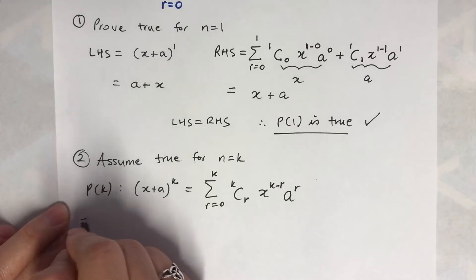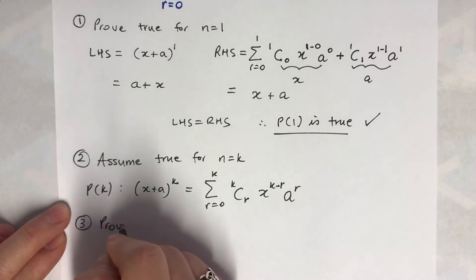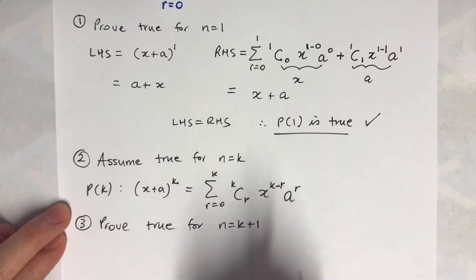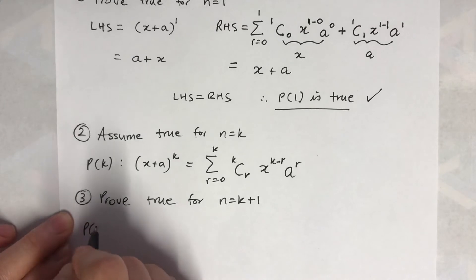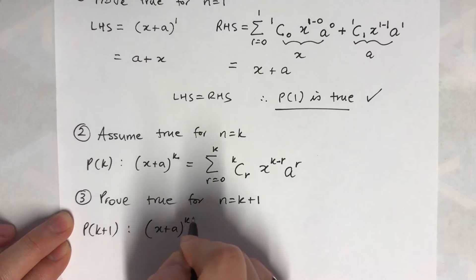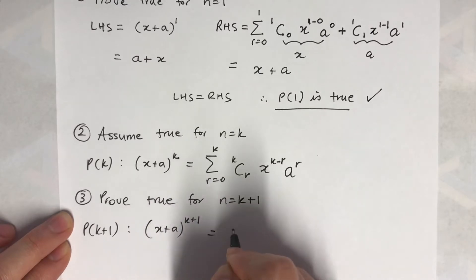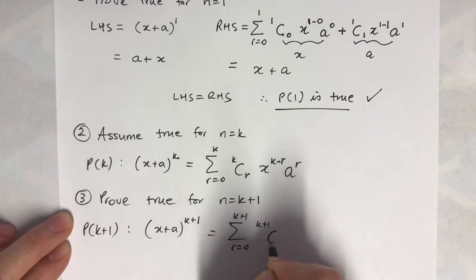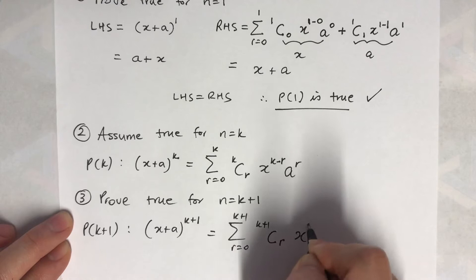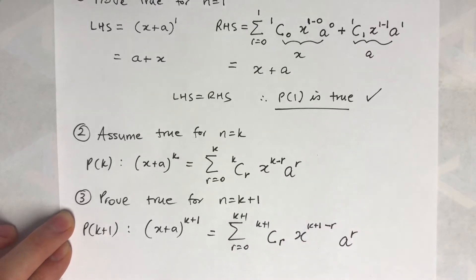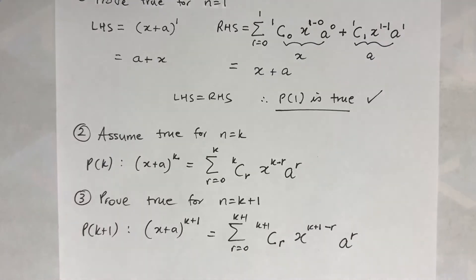Step 3: prove true for n equals k plus 1. We want to show (x + a)^(k+1) equals the sum from r=0 to k+1 of (k+1)_C_r · x^(k+1−r) · a^r. Now this is the hard part, so I need more space here.